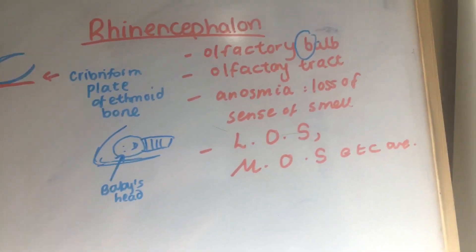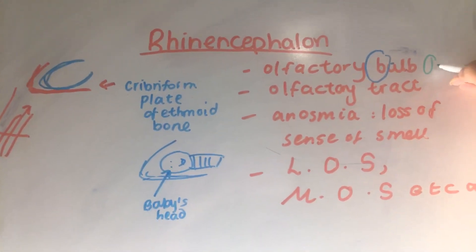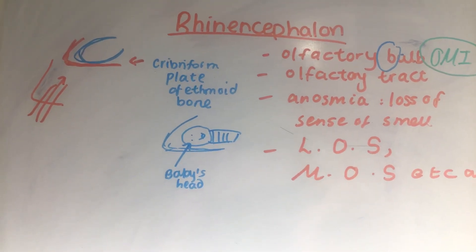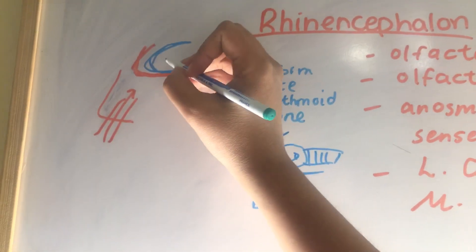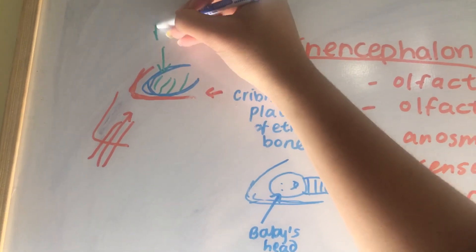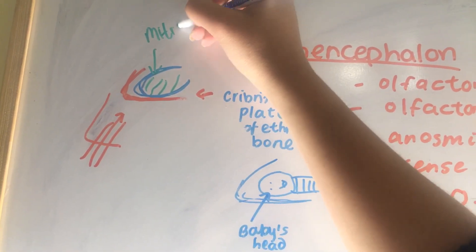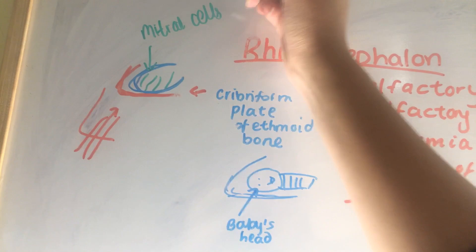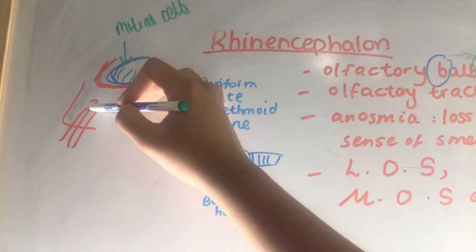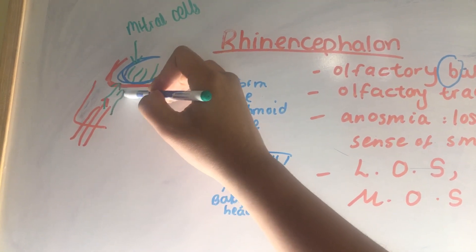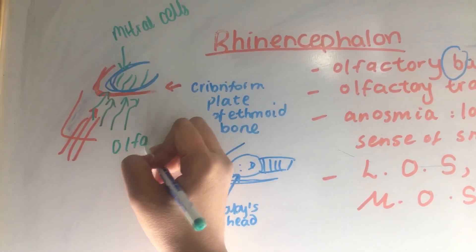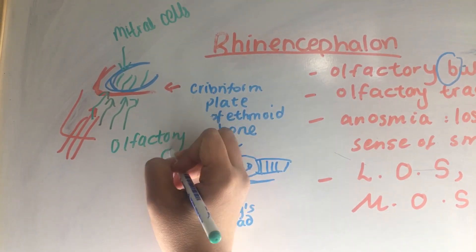The key thing to remember for the olfactory bulb is the mnemonic OMI — imagine a baby always saying 'OMI' or 'oh my.' That stands for mitral cells, which are the key neurons found within the olfactory bulb.